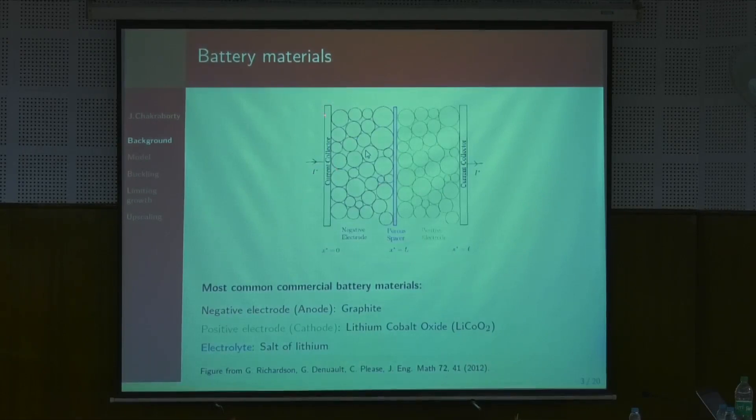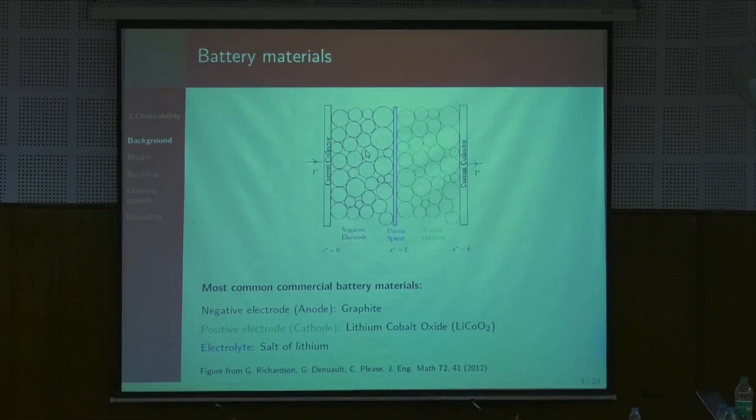You basically have a sandwich structure. On the left-hand side you have one current collector; on the right-hand side, another current collector — these are very thin metallic foils. On the right-hand side I have depicted the anode, and this is the cathode side. Traditionally the anode is made of graphite, and usually the cathode is made of lithium cobalt oxide, with various lithium salts as the electrolyte. My talk will be focused on the anode side — on one particle of the anode — because the anode is not a monolithic structure.